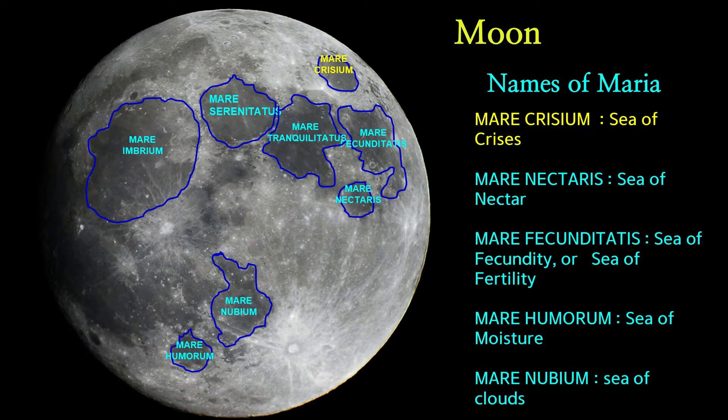Mare Crisium is a lunar mare located in the Moon's Nectaris basin, just northeast of Mare Tranquilitatis. Mare Crisium means Sea of Crisis.